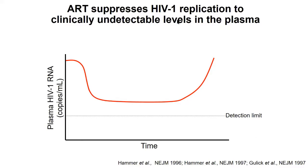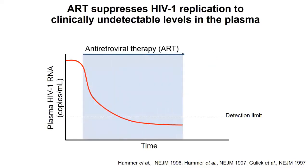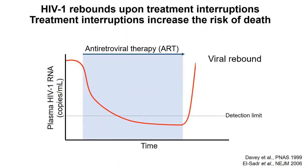HIV persists in the latent reservoirs — a major barrier to cure. Untreated HIV will lead to AIDS, but fortunately we have antiretroviral therapy, so all HIV-infected individuals can have undetectable viral loads. However, whenever they stop antiretroviral therapy, the virus will rebound.